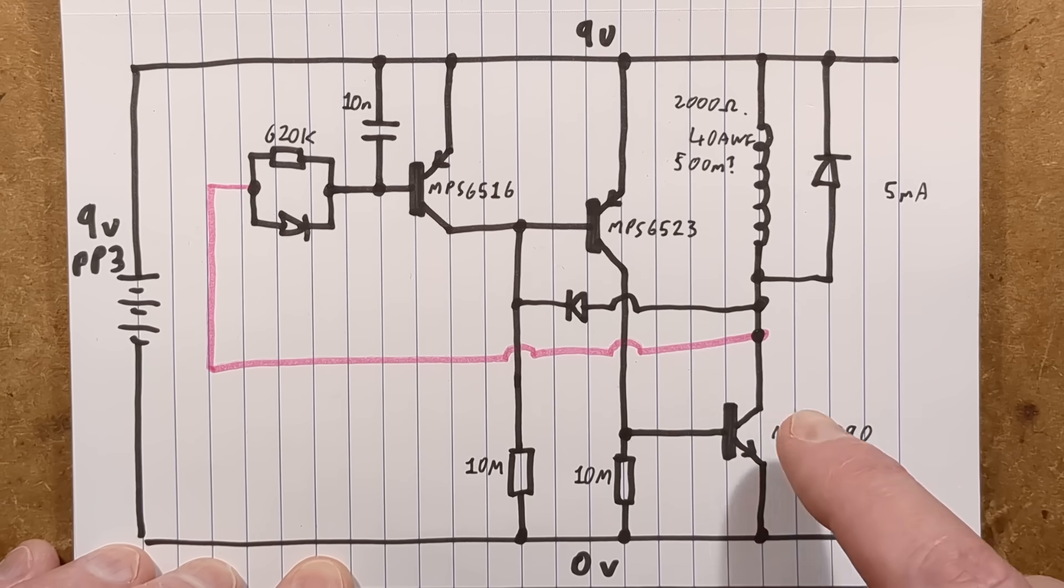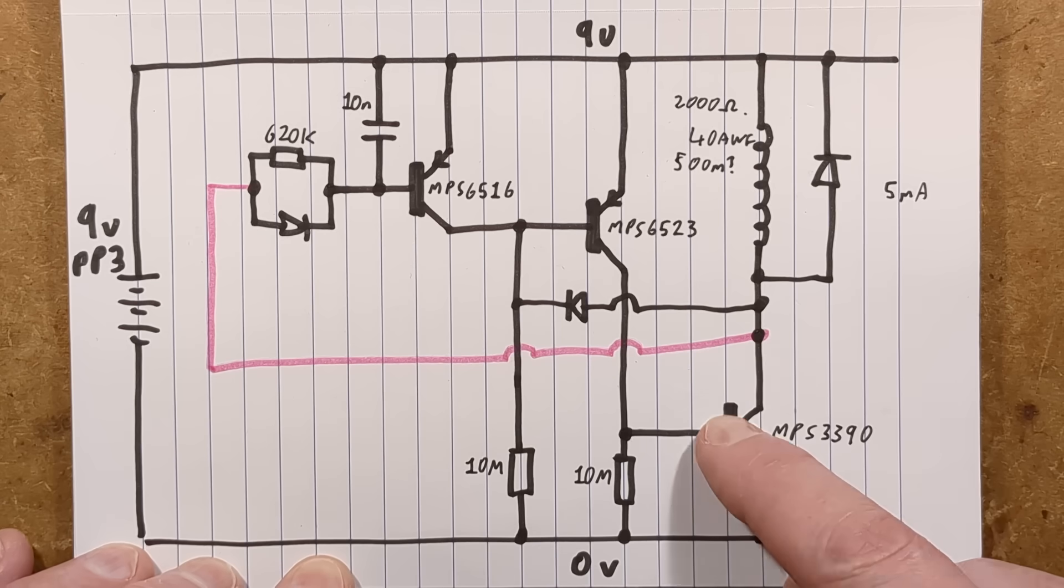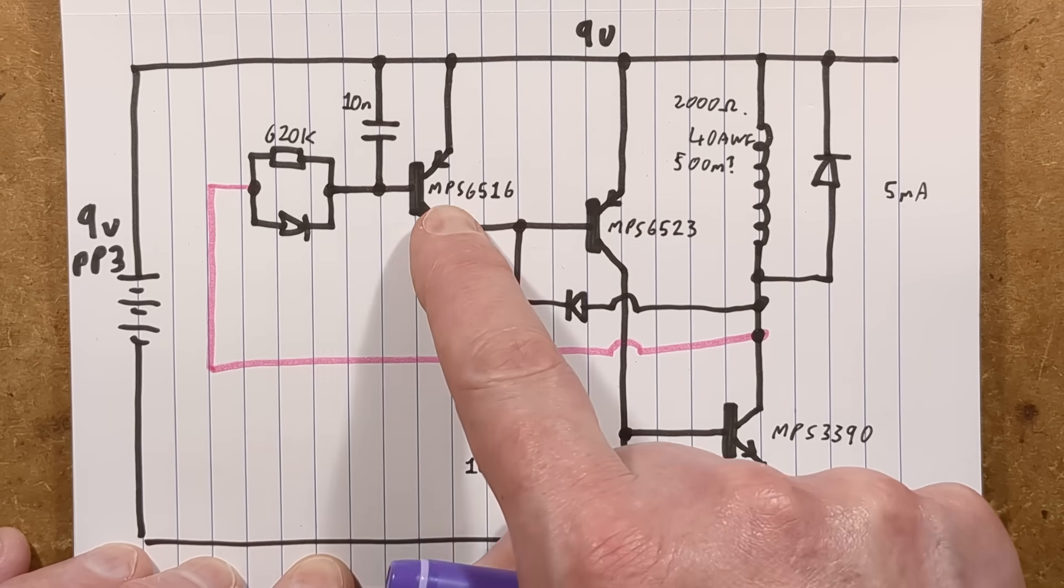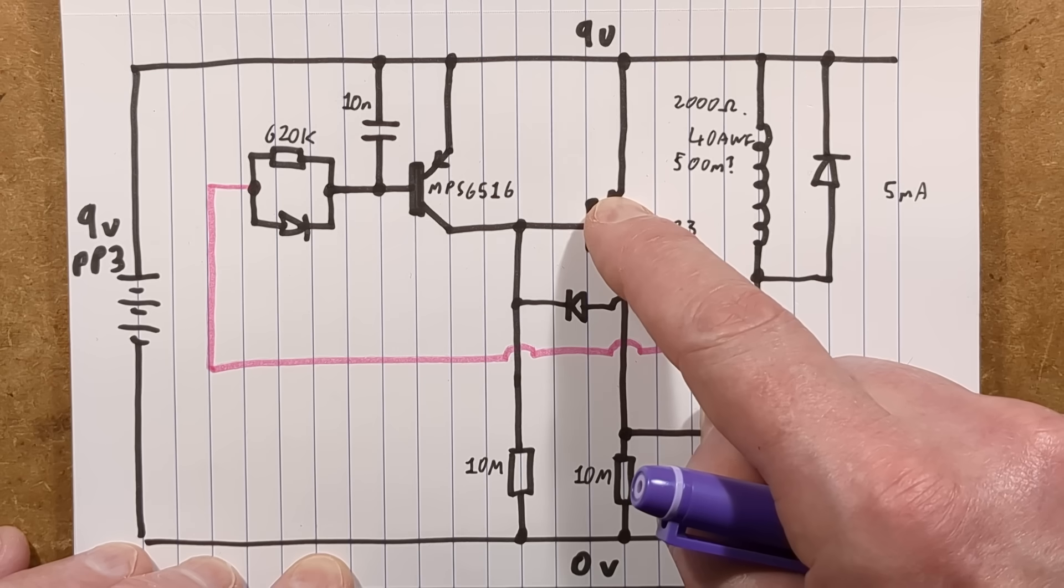There's an NPN transistor, which switches to the negative rail. And you have to take its base positive to actually turn it on. And there are two PNP, two different PNP transistors, that are going to the positive rail. And you have to take their base negative to turn them on.